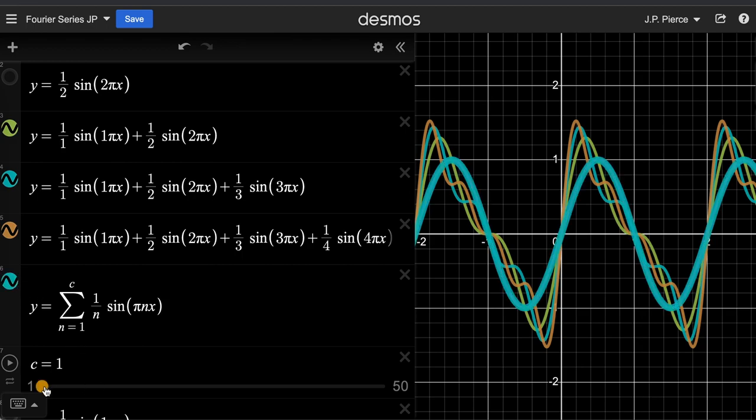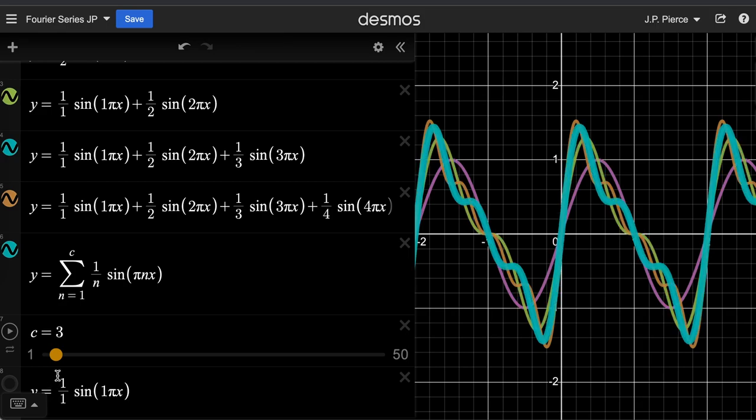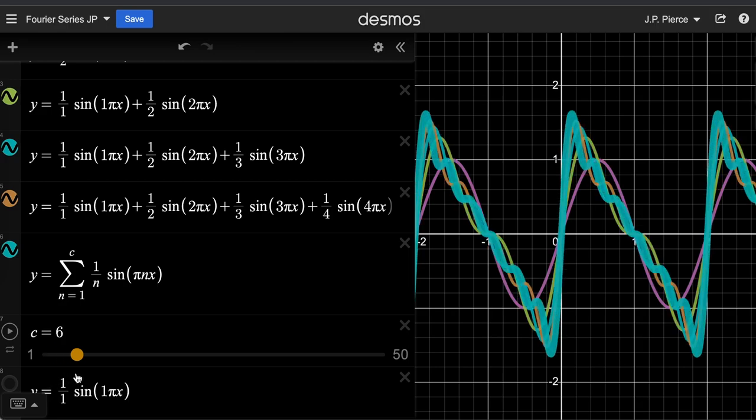This would be only the first term. And you can see it's just overlapping the graph I drew before. There is 2, 3, 4, 5, 6.